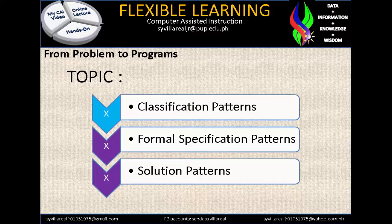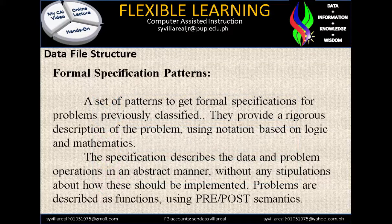We're going to proceed with formal specification patterns and solution patterns. Last time we finished classification patterns. Formal specification patterns is a set of patterns to get formal specification for problems previously classified in classification pattern. Without classification pattern from part 1, you cannot go directly to formal specification patterns. They provide a rigorous description of the problem using notation based on logic and mathematics, describing data and problem operations in an abstract manner, without any stipulations about how this should be implemented. Problems are described as functions using pre-post-semantics.